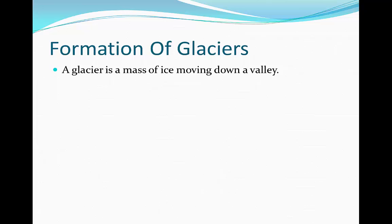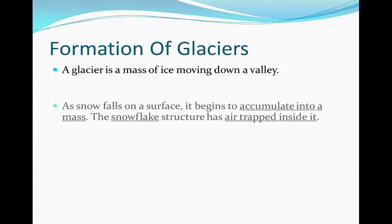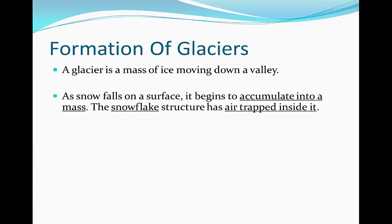A glacier is a mass of ice moving down a valley. Its formation is relatively simple. As snow falls on a surface, it begins to accumulate into a mass.